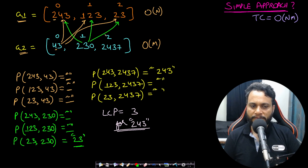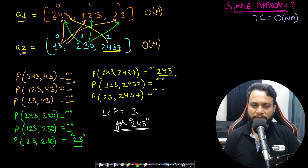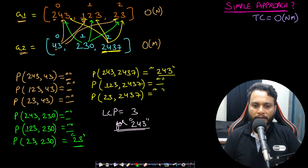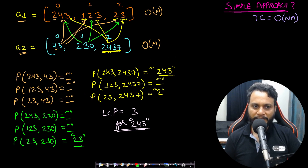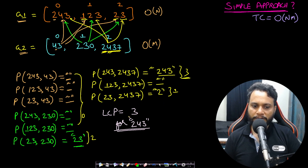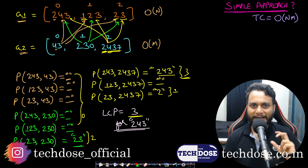Continuing: 2437 matched with 243 gives a common prefix of 243. Matched with 123, there's nothing in common. Matched with 23, the common prefix is 2 because 3 doesn't match 4, giving prefix length 2. Out of all the common prefix lengths — several zeros, length 2, length 3, and length 1 — the longest is 3. Therefore the answer is 3, which corresponds to 243. This is the brute force approach.